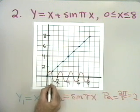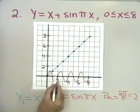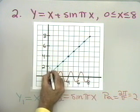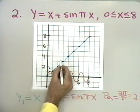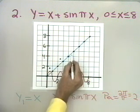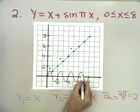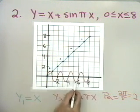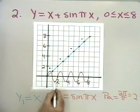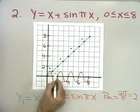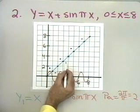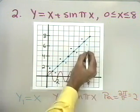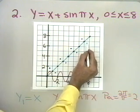Everywhere the red graph is 1, I'm going to add 1 to the green graph. So here, I add 1 to the green graph and get this point. I do the same at successive peaks. Everywhere the red graph is negative 1, I pull the green graph down by 1. Here the red graph is negative 1, I pull the green graph down. I do that at each trough across the range.